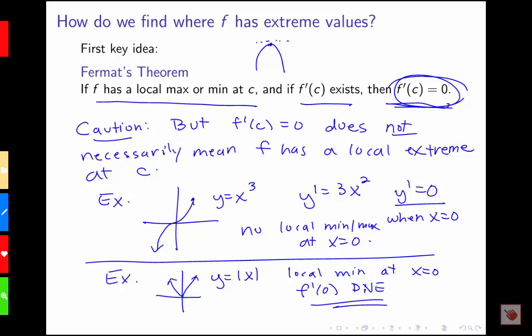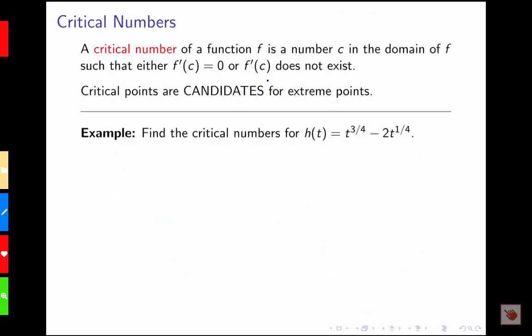That brings us to our second key idea. We call these special numbers — where the derivative doesn't exist and where the derivative is equal to zero — critical numbers. A critical number of a function f is a number c in the domain of our function such that either the first derivative at that point is zero or the first derivative does not exist. These critical numbers are candidates for our extreme points, and there will be a second step where we determine which of them are actually extreme values.